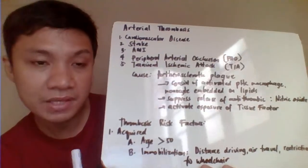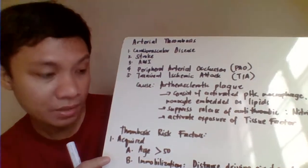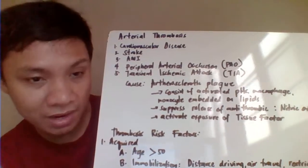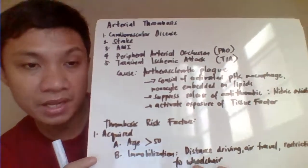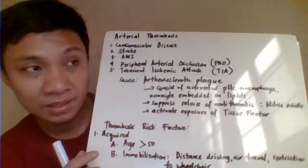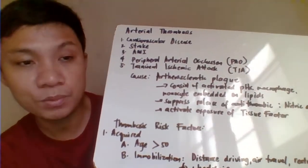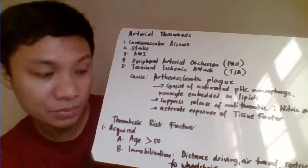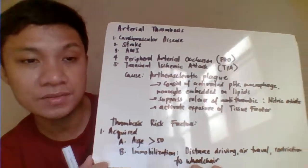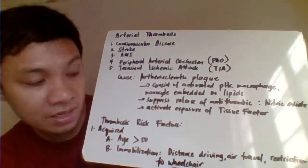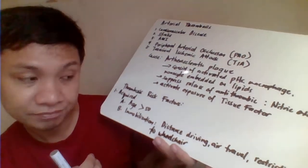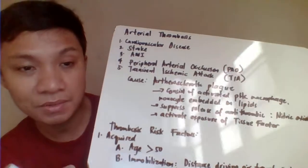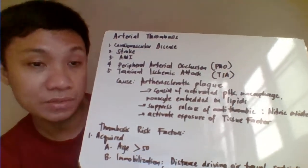The risk factors associated with thrombosis include acquired and congenital factors. Among acquired factors, age over 50 years old puts the patient at higher risk. Immobilization — like long-distance driving, long-distance travel, or being bedridden — increases the tendency to develop stroke. It's important to keep moving to prevent stroke.